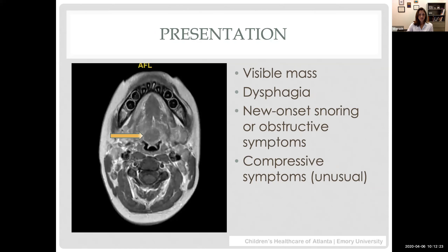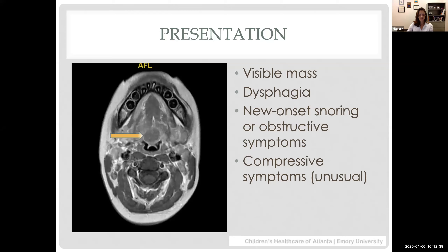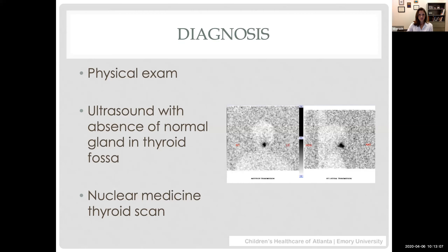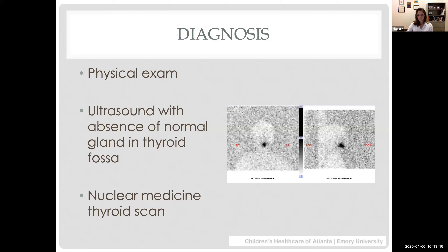Presenting symptoms typically include a visible mass, dysphagia, new onset snoring or obstructive symptoms, and occasionally compressive symptoms. On T1-weighted MRI you can see a well-circumscribed lesion in the oropharynx just anterior to the epiglottis that is roughly iso-intense with the tongue. As an ENT you would perform physical exam and consider ultrasound to make sure there is a gland in the fossa. A nuclear medicine scan — though not something I typically order — would show activity concentrated in the oropharynx rather than the anterior neck.